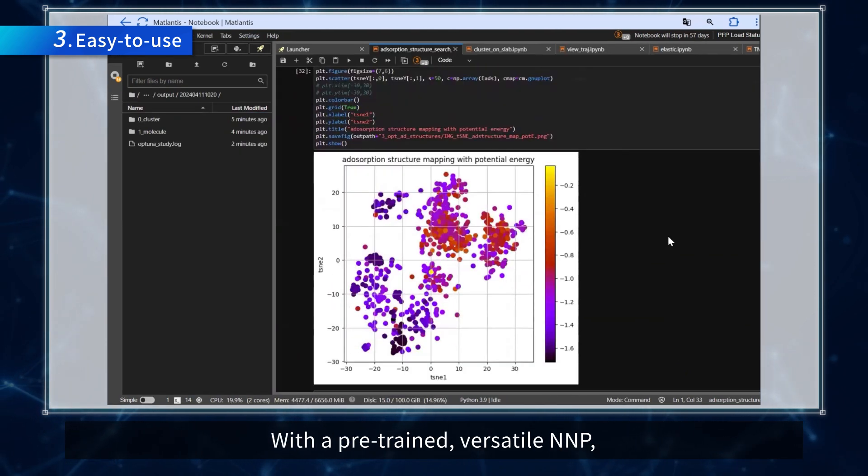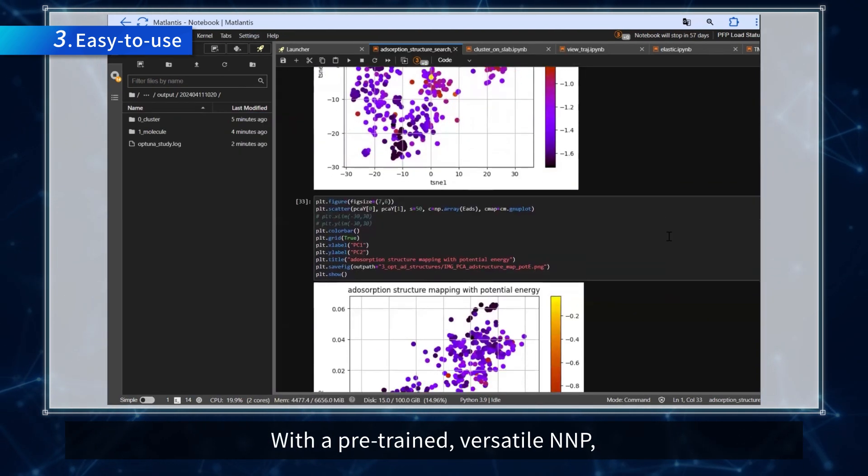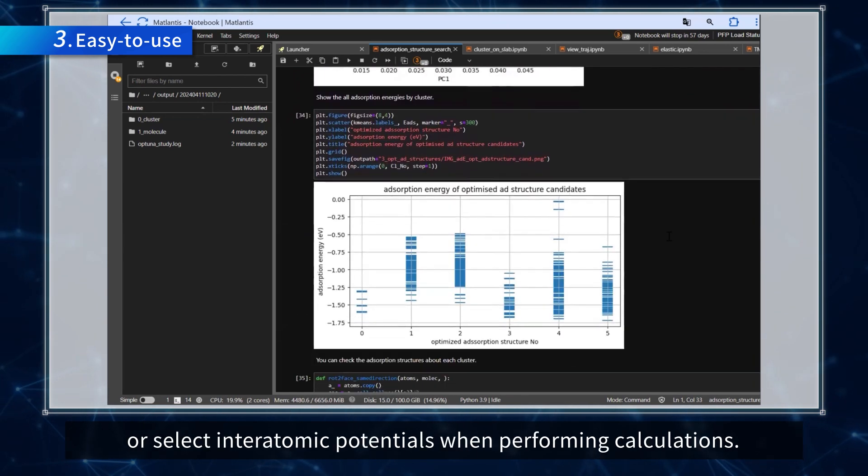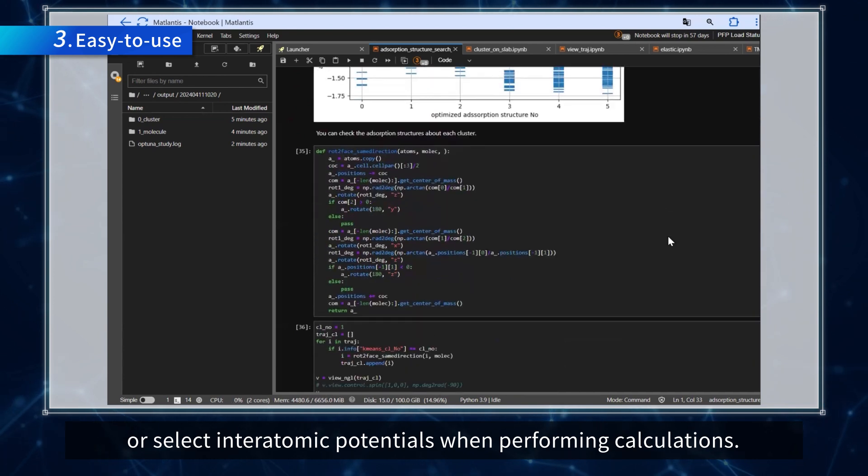With a pre-trained versatile neural network potential, you do not need to collect training data, build machine learning models or select interatomic potentials when performing calculations.